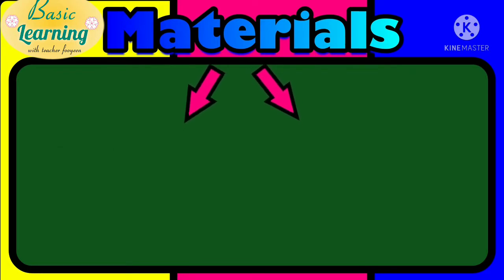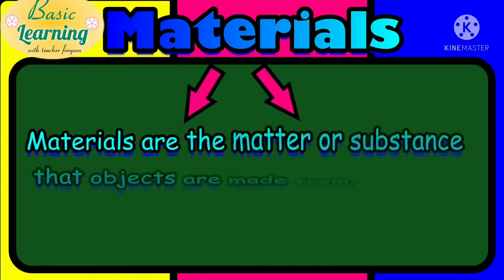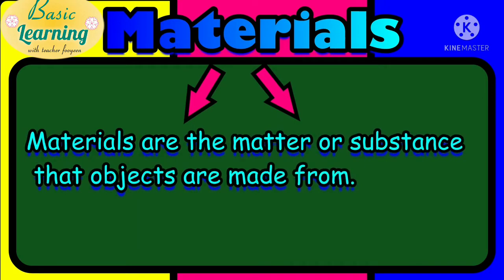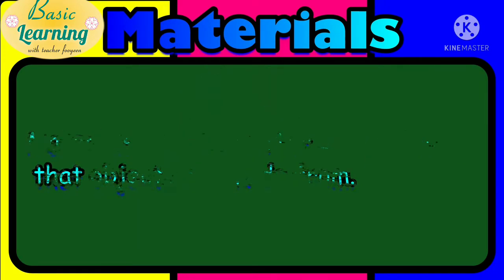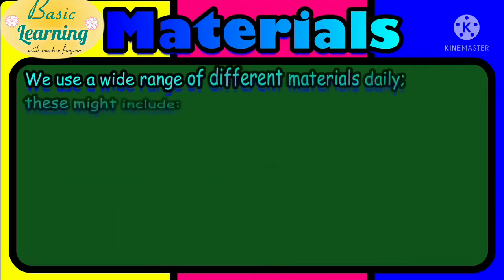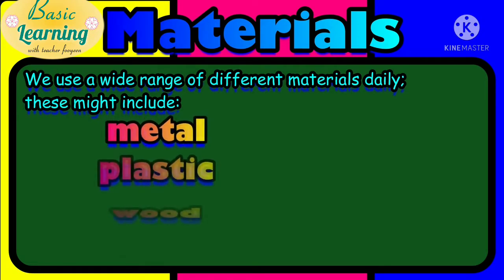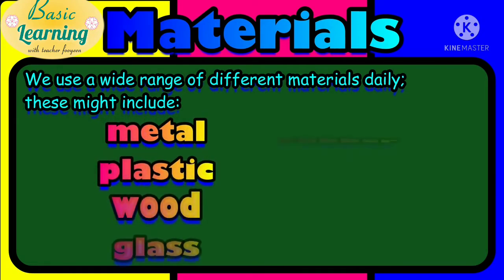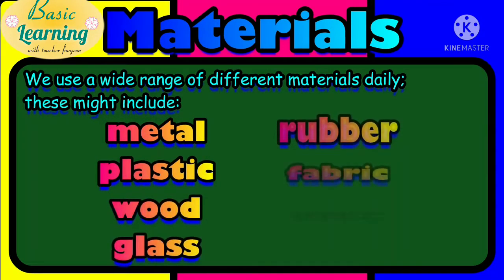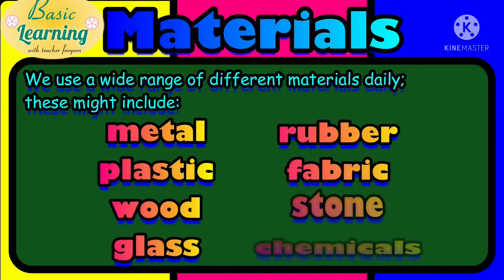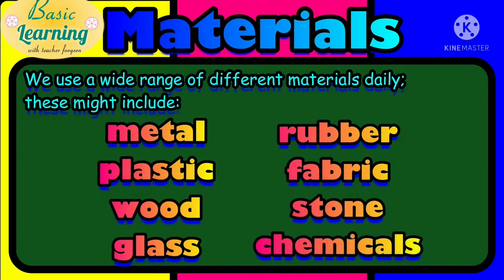Materials are the matter or substance that objects are made from. We use a wide range of different materials daily, as we use them in our everyday life. This might include metal, plastic, wood, glass, rubber, fabric, stone, and chemicals.